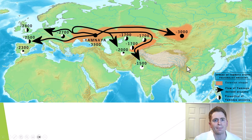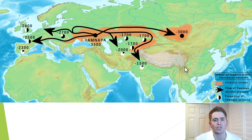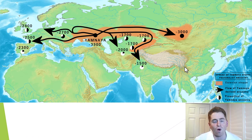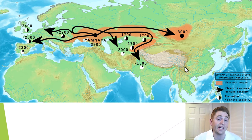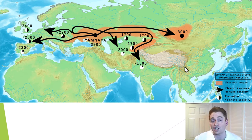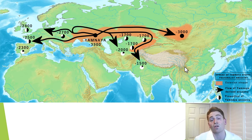This map shows the approximate movement of the Yamnaya culture over time — they spread far and wide. They influenced many different cultures, interbred with people, and shaped early modern civilization both culturally and genetically. You probably have some steppe DNA within you if you're watching this, unless you're 100% pure Australian Aborigine, because their descendants essentially went all around the world.